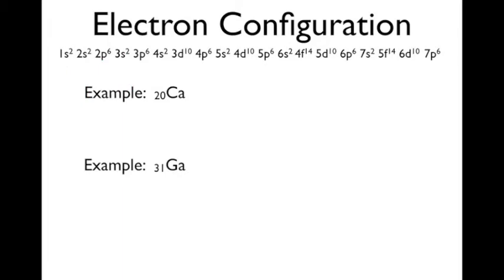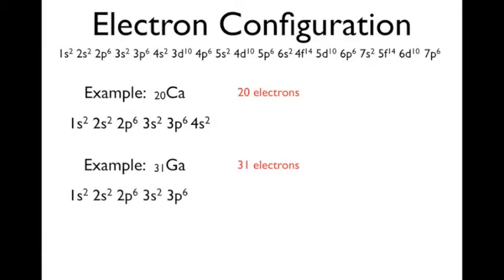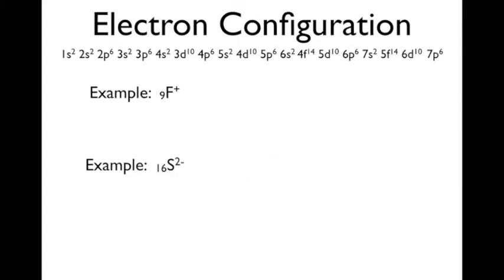We'll try again with calcium. Calcium has 20 electrons, so you just add up to 20. There's 2, 4, plus 6 is 10, plus 2 is 12, plus 6 is 18, and then plus another 2 is 20. Next one, gallium has 31 electrons. So 2, 4, 10, 12, 18, 20, 30, and 1 more makes 31. That's all you've got to do.